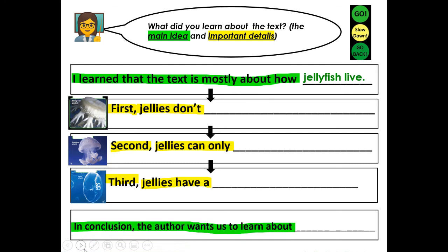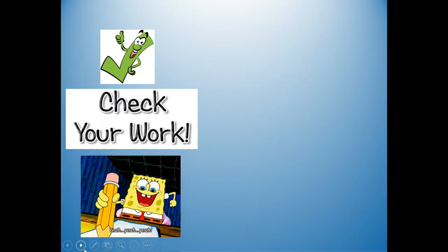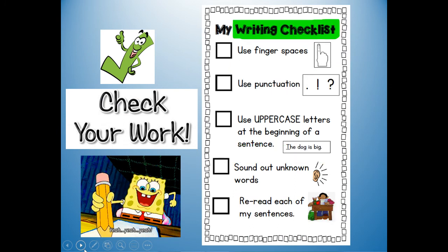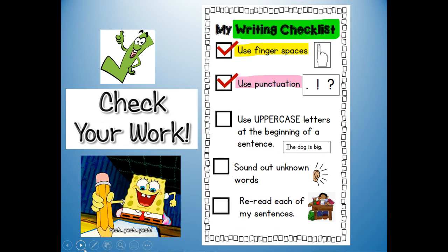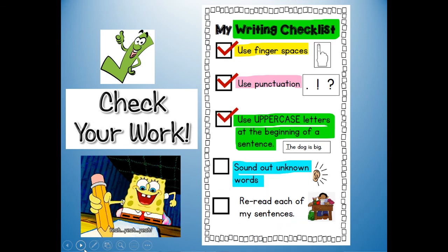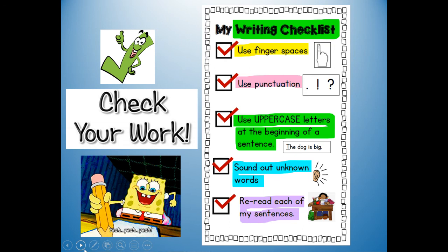Now I'm going to give you your conclusion: in conclusion, the author wants us to learn about jellyfish. It's time to check your work — your three detail sentences. Did you use finger spaces between each of your words? Did you use punctuation — a period at the end of each sentence? Did you use an uppercase letter for names and at the beginning of each sentence? Did you sound out unknown words? Make sure you reread each sentence so they sound correct. Push pause to add anything you need, then push play.